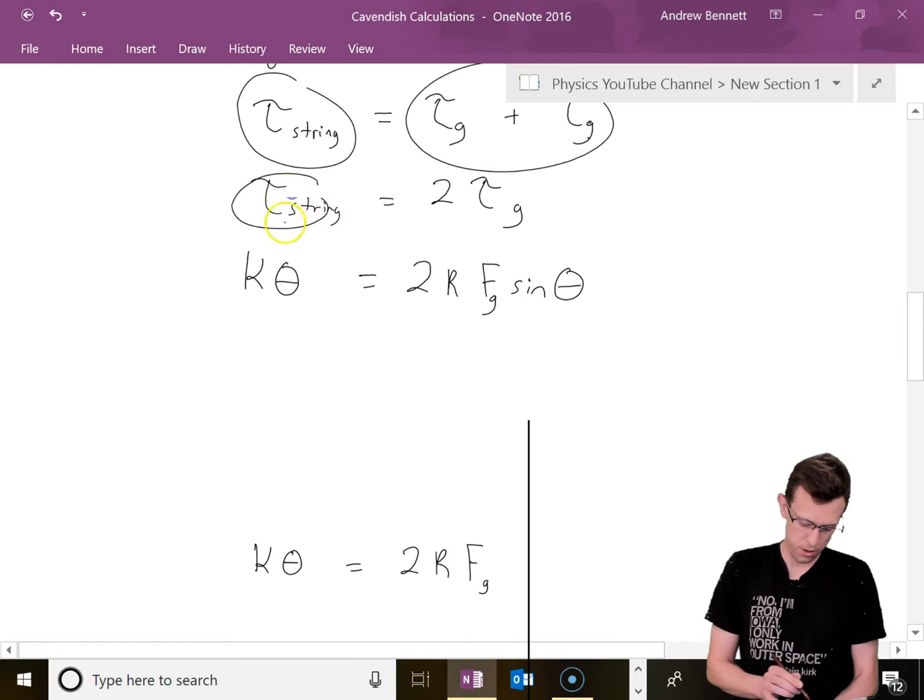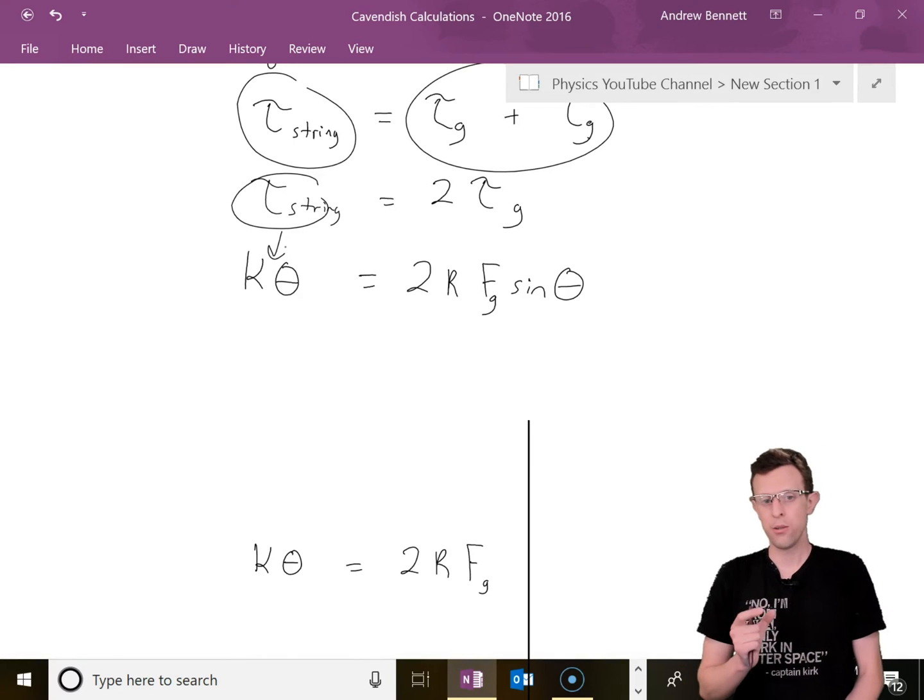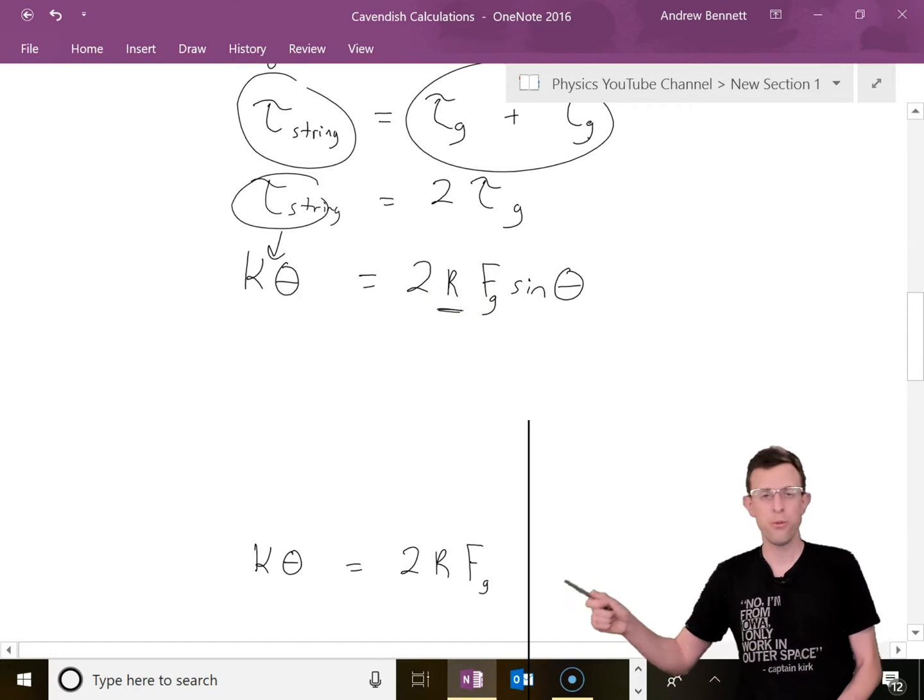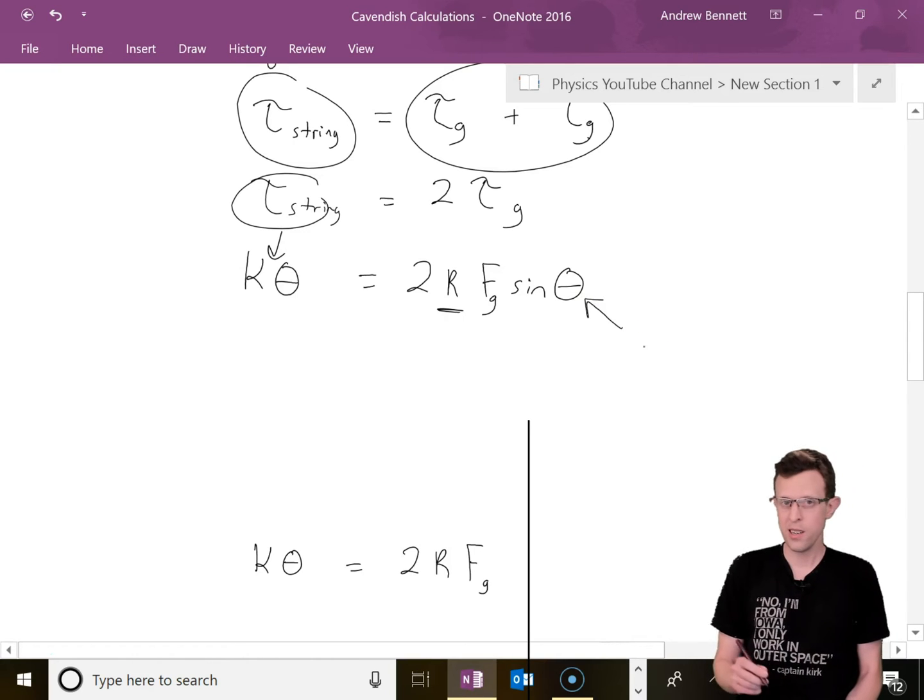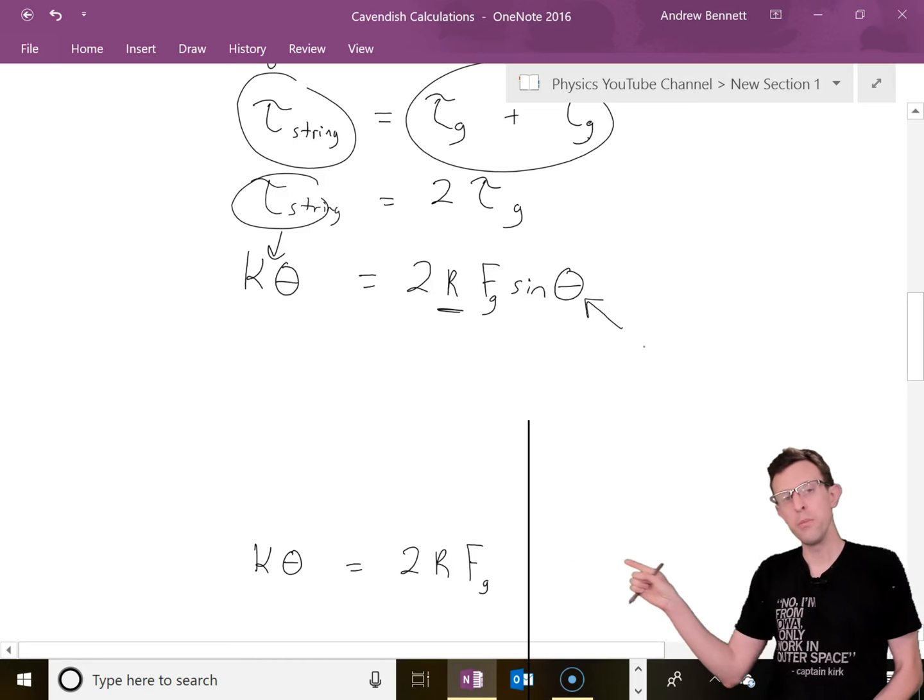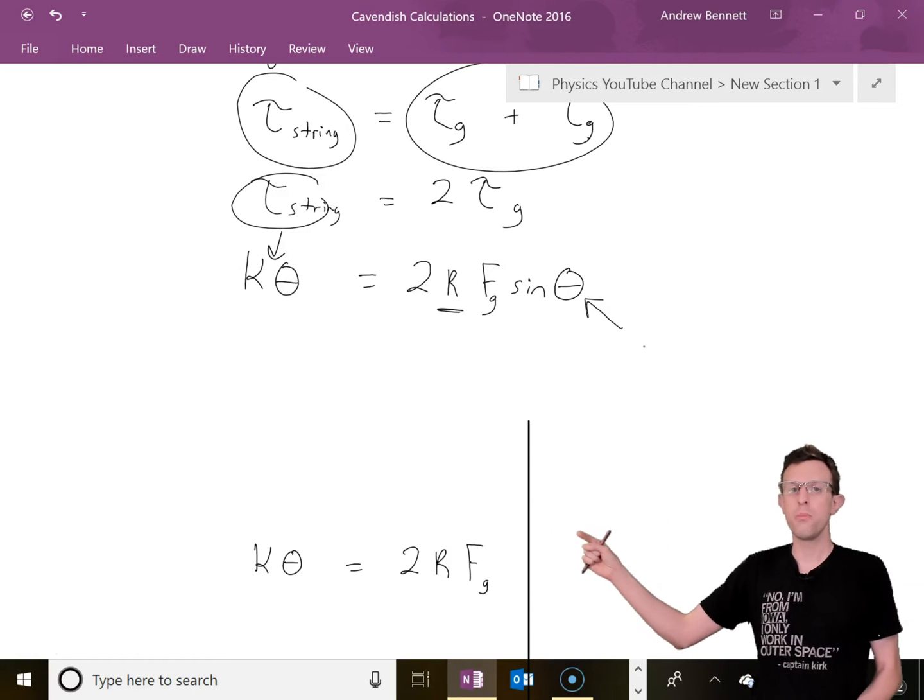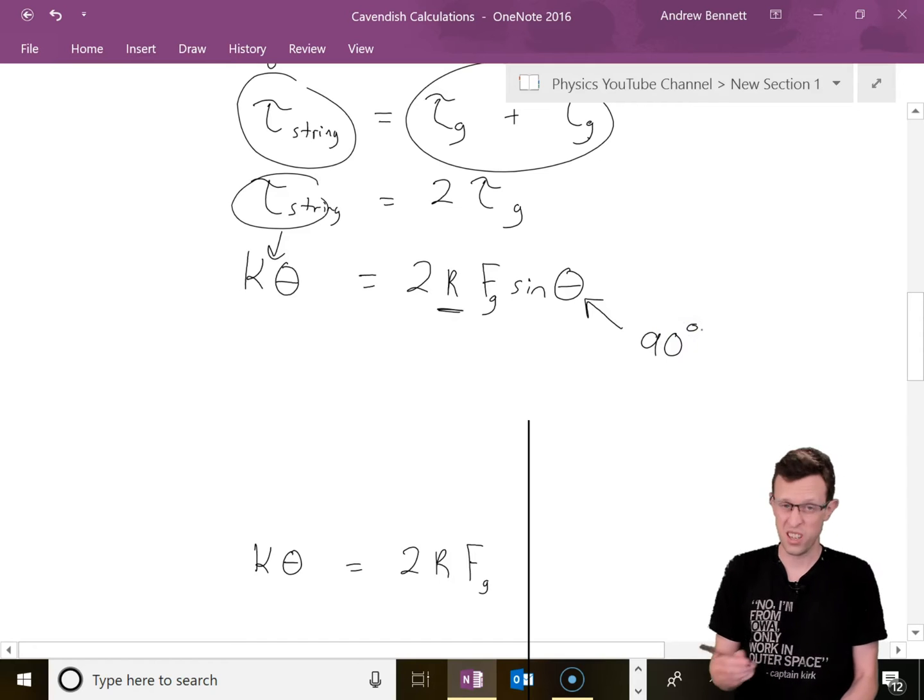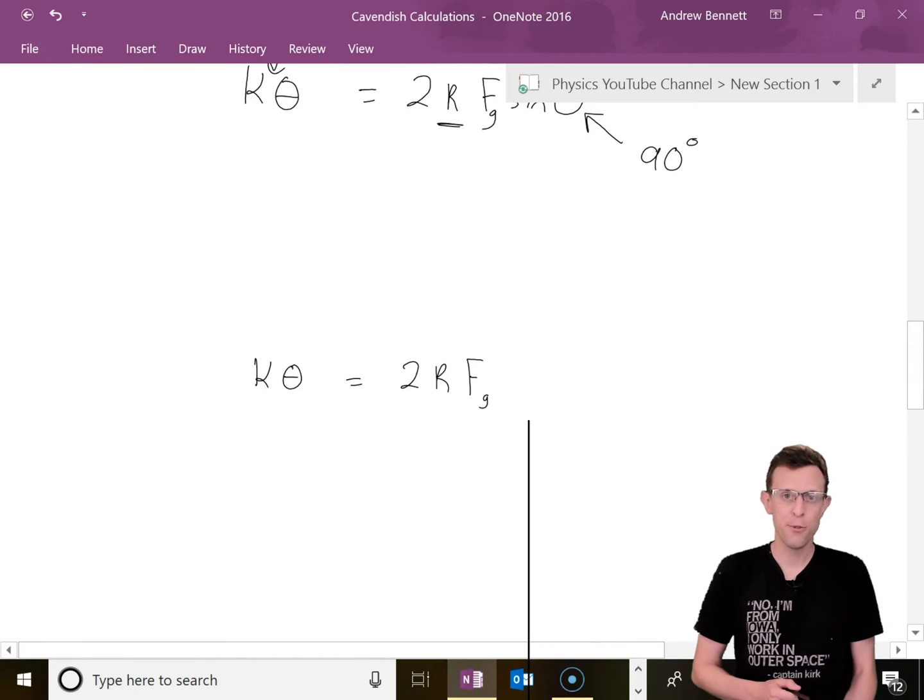I've replaced this term with kappa times theta, the torque caused by the string. Over on the other side, we've got 2 times R Fg sine theta. This theta is a different theta - it's the angle between the R vector pointing from the middle out to where the force acts and the direction of the force. R goes along the bar, Fg is perpendicular to the bar, so that angle is 90 degrees. The sine term drops out, and we're left with kappa theta equals 2 R Fg.